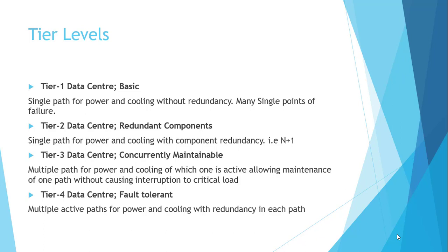Thus there is a third category — Tier 3 data center. It is concurrently maintainable, meaning it has multiple paths for power and cooling, of which one path can be taken down for maintenance while the other path keeps running. This ensures there is no interruption to your critical loads.